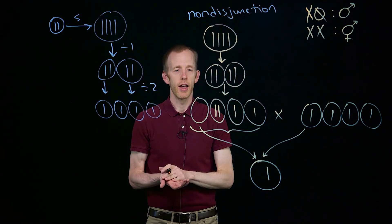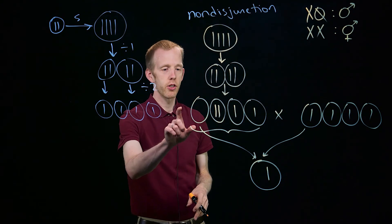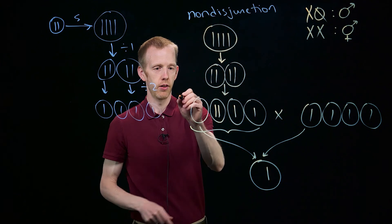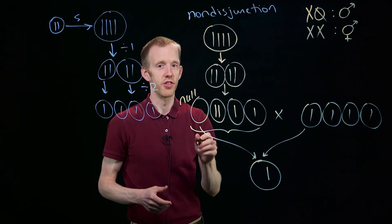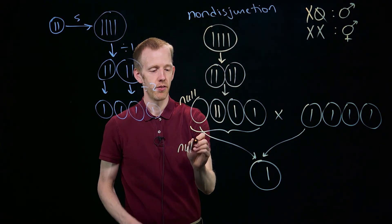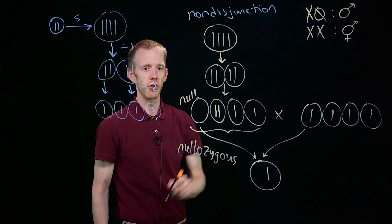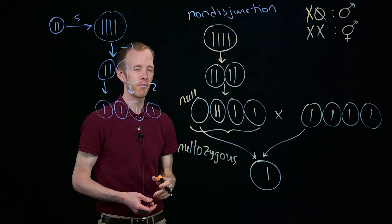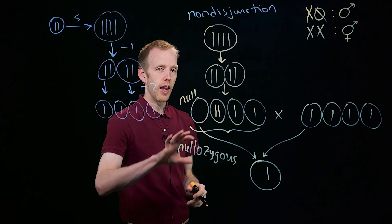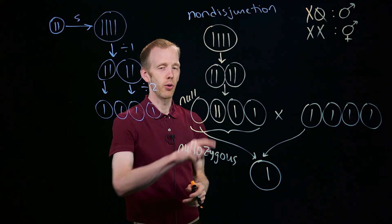And hopefully you realize that by virtue of non-disjunction producing null, or nullozygous as it's sometimes called, when you make a null gamete, you also make a diploid gamete.